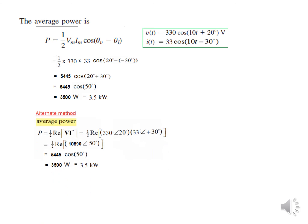As an addendum, let's demonstrate the phasor method for average power. Writing the voltage as 330∠20° and the current as 33∠−30° in phasor form, we take the conjugate of the current phasor, so −30° becomes +30°, giving 33∠+30°. Multiplying V̅ · Ī* and taking the real part gives cos(50°) times the magnitudes; multiplying by ½ yields 3.5 kW — the same answer as before.